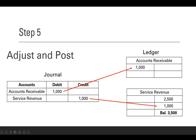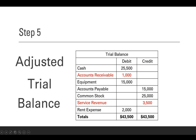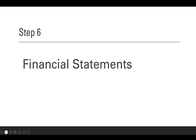Let's look at one adjusting entry example. Say a customer came along, we did some work for them, but we haven't recorded the transaction yet. It's the end of the period and we want to get this revenue into our financials. So we prepare an adjusting journal entry: debit accounts receivable, credit service revenue. Our service revenue already had $2,500 in it; now we're adding $1,000, so revenue becomes $3,500. We then prepare an adjusted trial balance showing accounts receivable and the new amount for service revenue. The adjusted trial balance is what we use to prepare our financial statements.